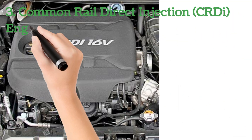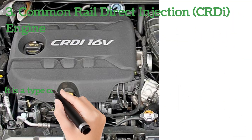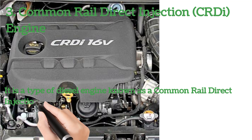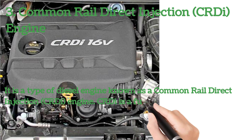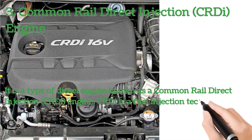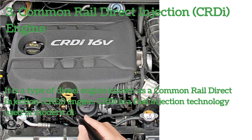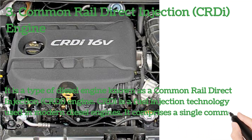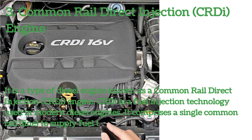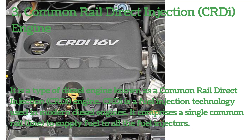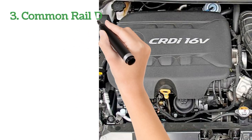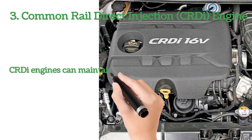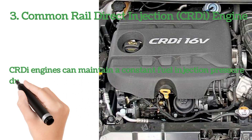Number three: CRD engine. It is a type of diesel engine known as a common rail direct injection (CRD) engine. CRD is a fuel injection technology used in modern diesel engines. It comprises a single common rail line to supply fuel to all the fuel injectors. CRD engines can maintain a constant fuel injection pressure due to the presence of a common rail.